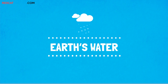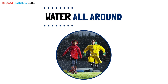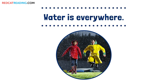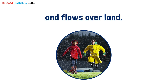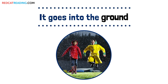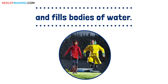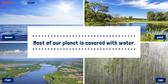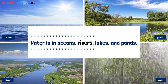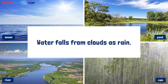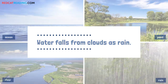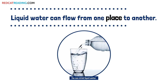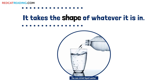Earth's water — water all around. Look around you — water is everywhere. Water falls from the sky and flows over land. It goes into the ground and fills bodies of water. Most of our planet is covered with water. Water is in oceans, rivers, lakes, and ponds. Water falls from clouds as rain. All this water is in a liquid state. Liquid water can flow from one place to another. It takes the shape of whatever it is in.